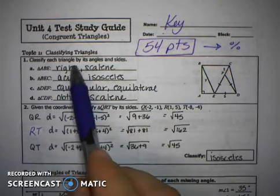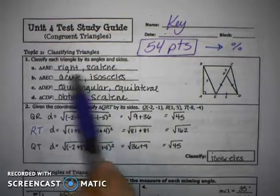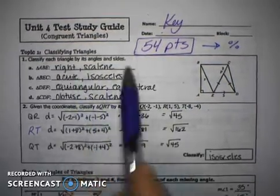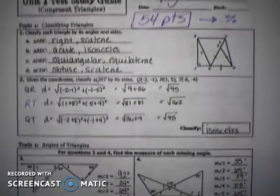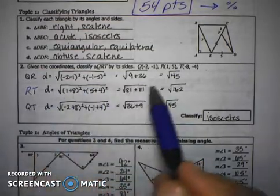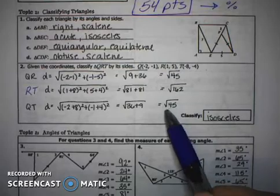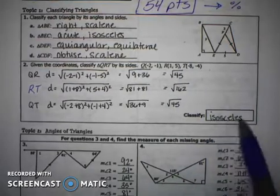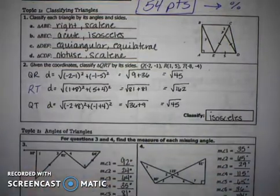For these first ones, you need to have both words written. The order doesn't matter, but you need both written for each one. Number two gives us two sides with a measurement of square root of 45 for those lengths, and that makes it isosceles, because these would both be congruent sides — QT and QR have to be congruent.